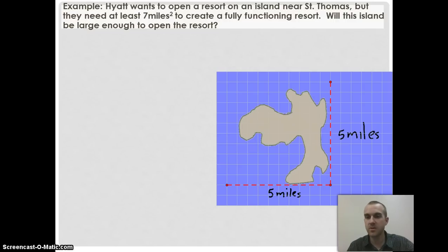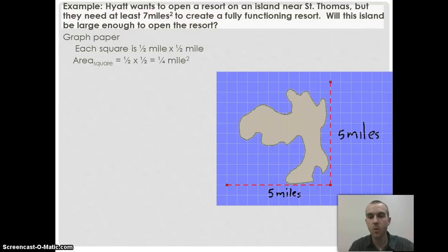First, we need to recognize what they're using for their graph paper. Looking at this, there are 10 blocks for five miles and 10 blocks for five miles. That means each side of the block is a half mile. Since I'm looking at one-half mile by one-half mile, the area of each square is one-fourth of a square mile. That's important for doing my underestimate and overestimate.